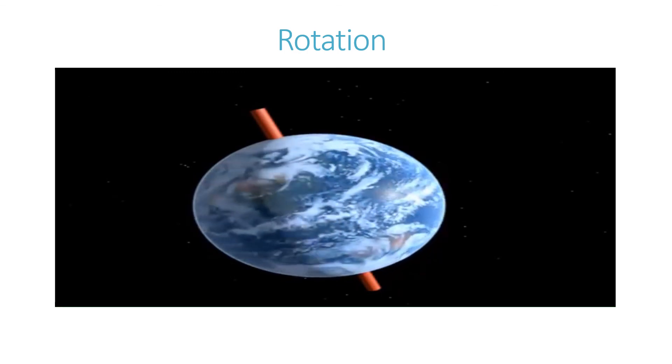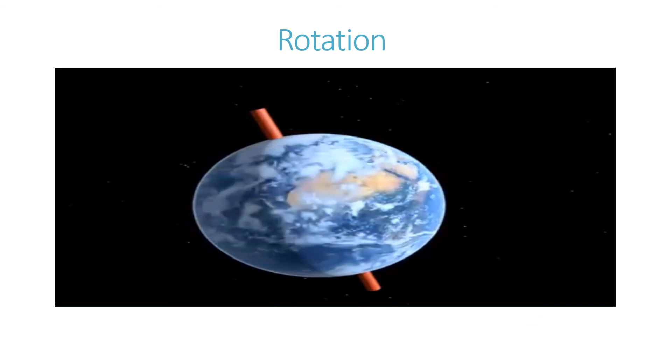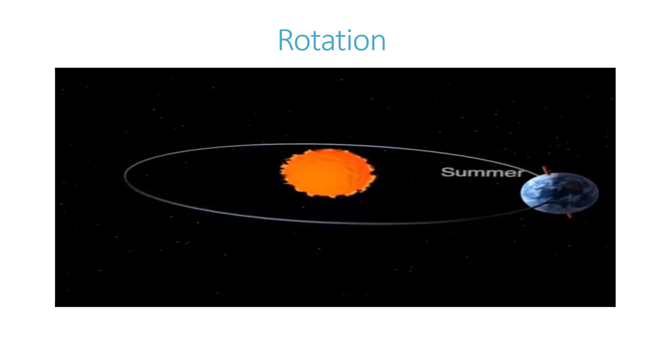The tilt of the axis affects when seasons occur. When the axis tilts toward the sun, the northern hemisphere experiences summer, while the southern hemisphere experiences winter.